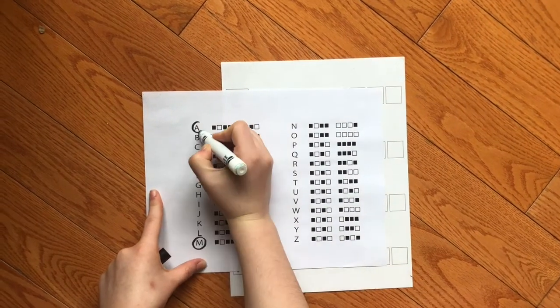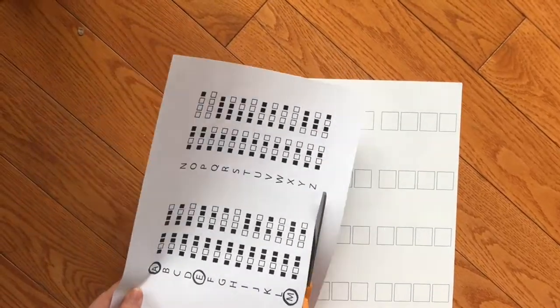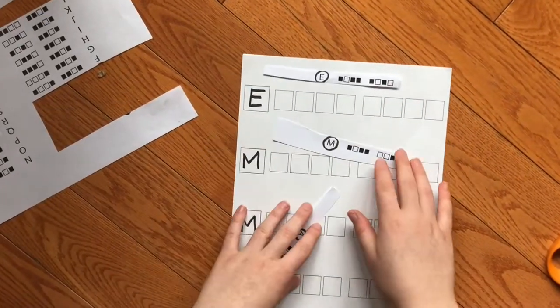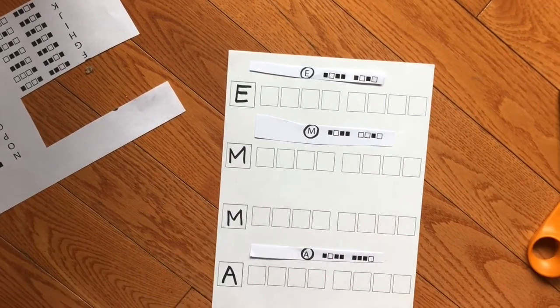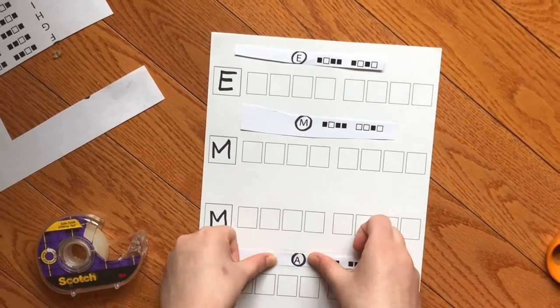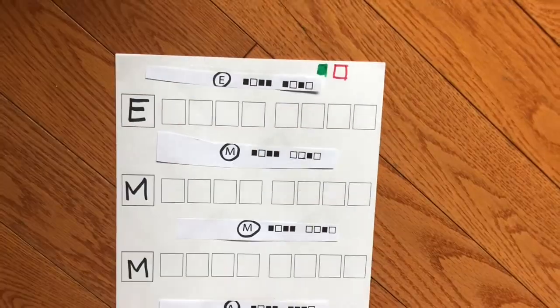I then circled the letters of my name on the binary code key and cut out the code. I taped the code above the letters of my name on the template, and I had to use another copy of the key because my name has two Ms.